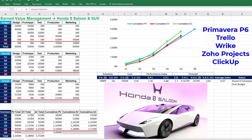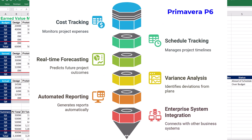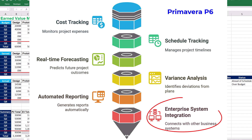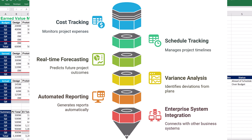Primavera P6 is a robust project management software of choice for large-scale engineering and construction industries. Its integrated earned value management system not only tracks costs and schedules but also provides real-time forecasting and variance analysis with a great level of detail. With Primavera P6, you can automatically update earned value reports as project data is fed into the system, reducing the amount of manual data manipulation needed. The software's capacity to integrate with other enterprise systems enhances its reliability and scope. Primavera P6 can be expensive and requires considerable training, but its project-tracking capacity is life-saving in complex projects with significant delay and cost overrun risks.